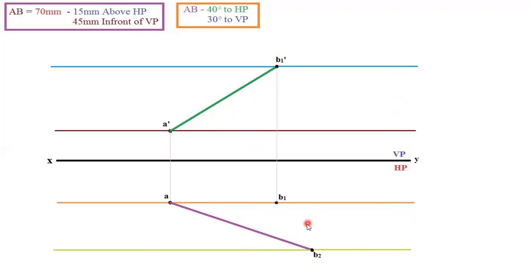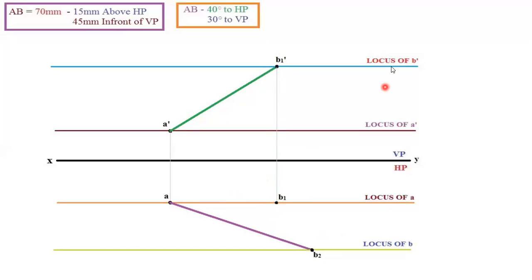We have 4 locus lines — 2 above and 2 below. The next step: always extend only your true length line, and the front view and top view will be found by rotating. So take the true length A dash B1 dash and extend point B1 dash horizontally with a very thin line until it meets the locus of A. Mark that point and name it B1. Repeat the same for the bottom: extend B2 horizontally until it meets the locus of A dash. Mark that point and name it B2 dash. You can label all four locus lines: locus of B dash, locus of A dash, locus of A, and locus of B.